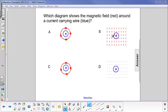Same wire in all four cases, and it's represented by an X, which are the tail feathers of an arrow. So that is pointed away from you or into the page.